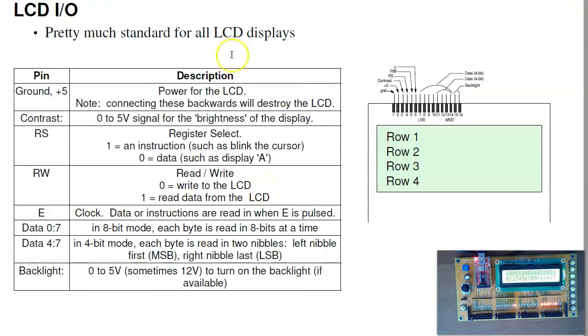The other pins, there is RS, register select. When I send data to it, I need to know do I want to send instruction number 0 or display data number 0. Read-write is you can read to the device, write to the device. E is the clock. When I send it data, I need to pulse the clock and let it know data's ready. And then you have the data lines. We're using 4-bit mode, so only the top 4 bits are being used, but there's also an 8-bit mode. And there's a backlight. The backlight is just there's an LED that makes the LCD brighten up.